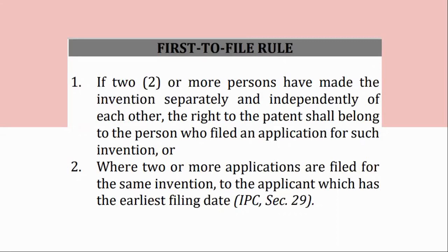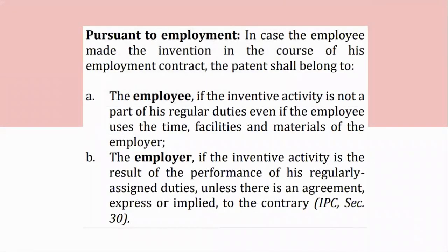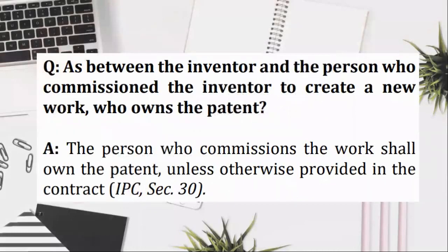(3) Inventions created pursuant to a commission: the person who commissions the work shall own the patent, unless otherwise provided in the contract. (4) Pursuant to employment: in case the employee made the invention in the course of his employment contract, the patent shall belong to (a) the employee, if the inventive activity is not a part of his regular duties even if the employee uses the time, facilities, and materials of the employer; (b) the employer, if the inventive activity is the result of the performance of his regularly assigned duties, unless there is an agreement, express or implied, to the contrary. IPC, Section 30. As between the inventor and the person who commissioned the inventor to create a new work, who owns the patent? The person who commissions the work shall own the patent, unless otherwise provided in the contract. IPC, Section 30.